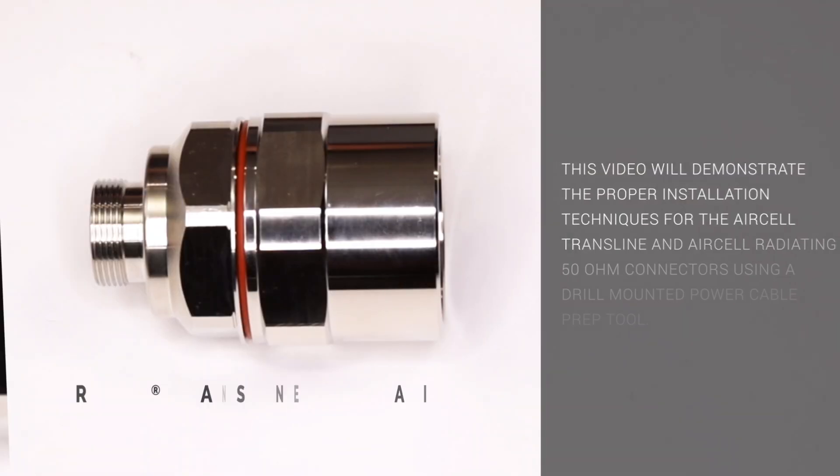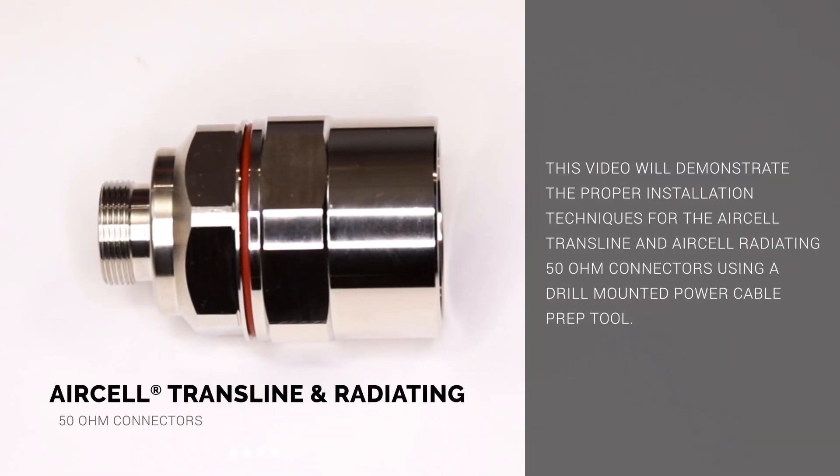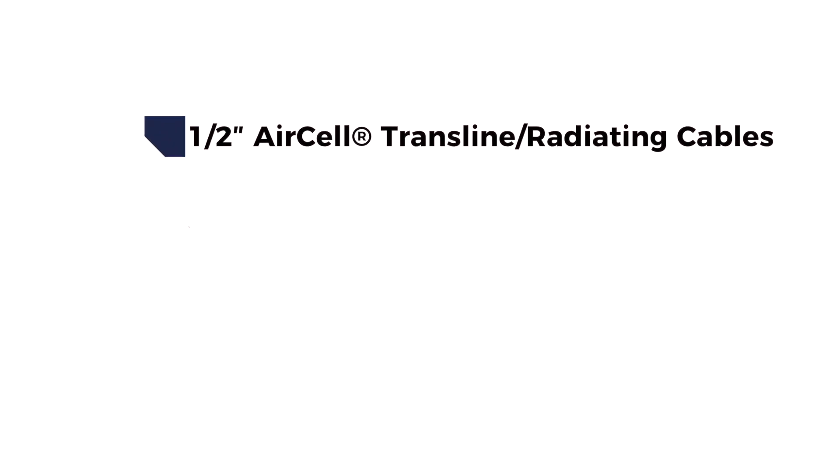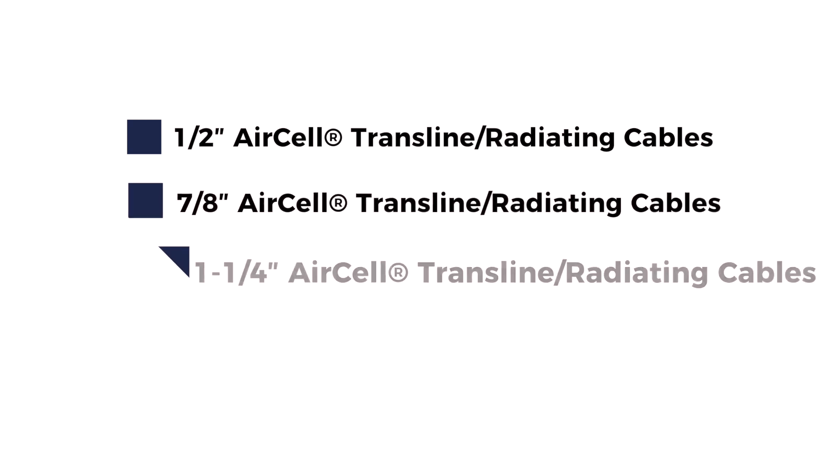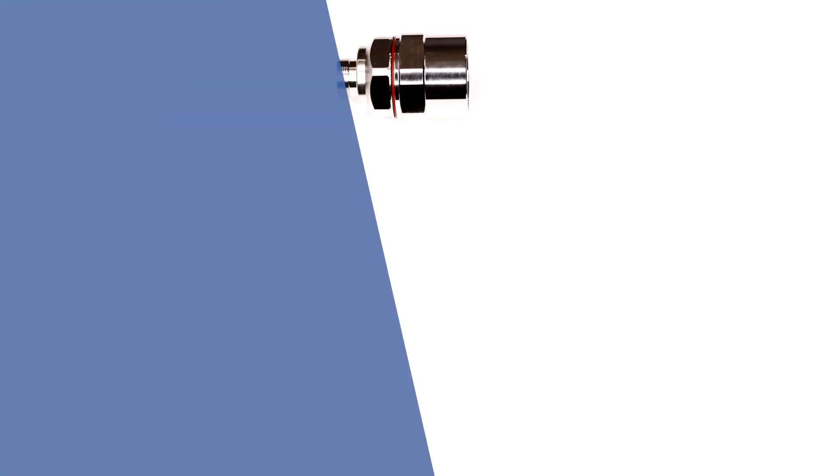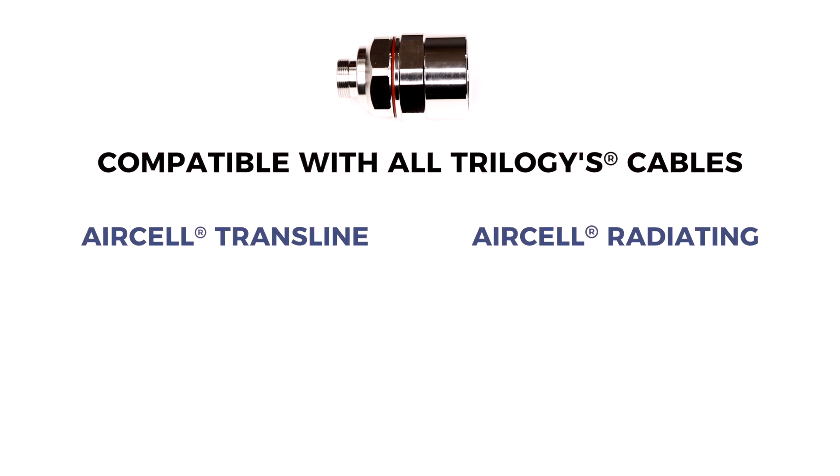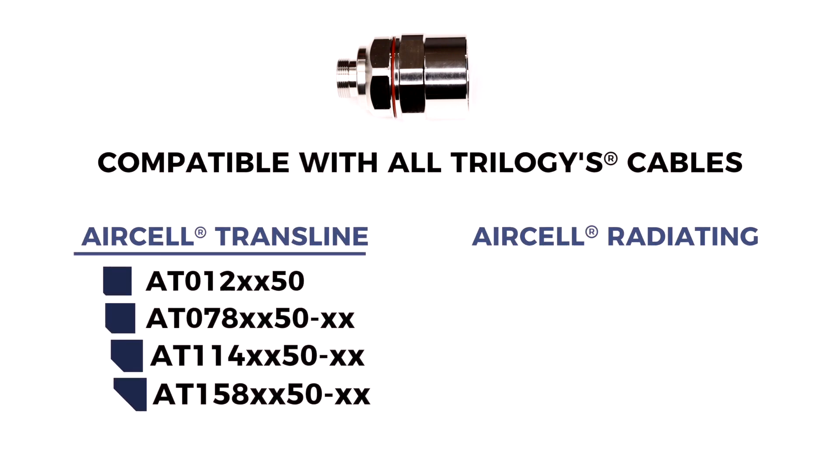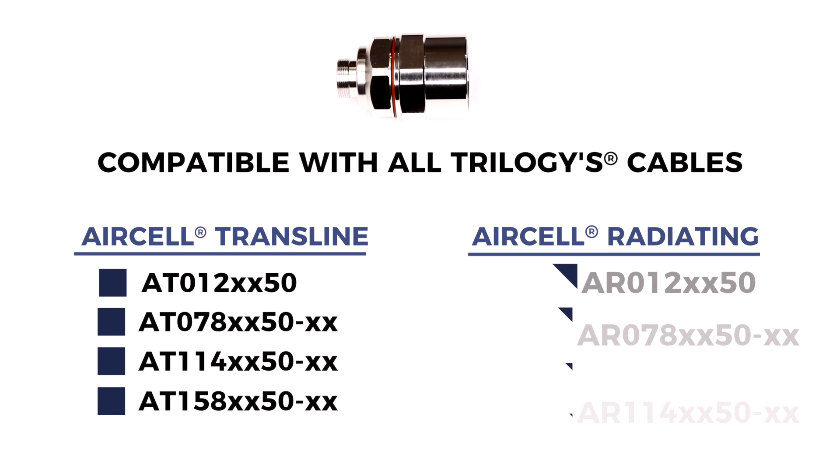This video demonstrates the proper installation techniques for AirCell transline and AirCell radiating 50 ohm connectors using a drill-mounted power cable prep tool on all half-inch, 7/8-inch, 1-1/4-inch, and 1-5/8-inch diameter cables. This connector is compatible with all Trilogy's AirCell transline and AirCell radiating cables.